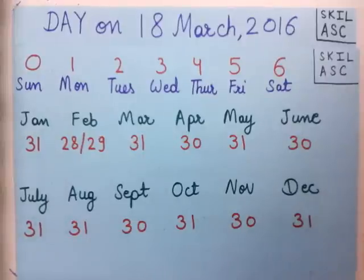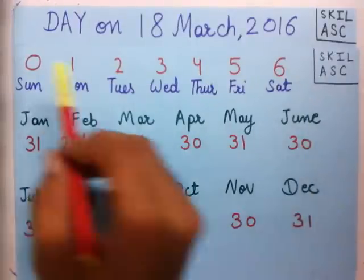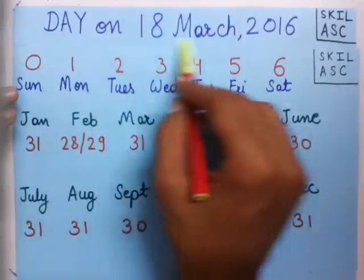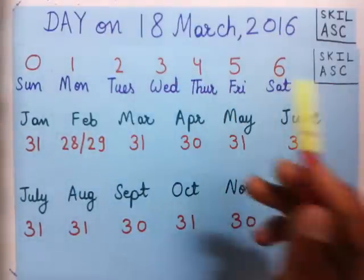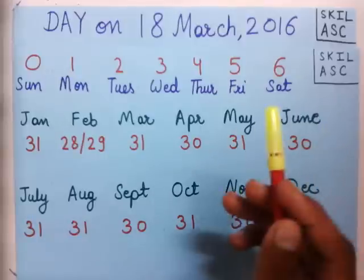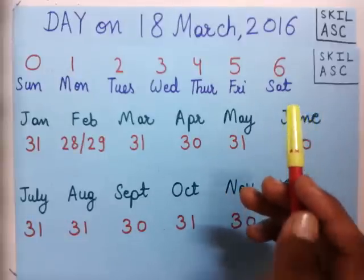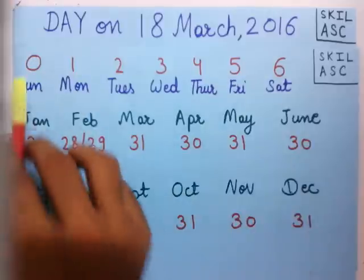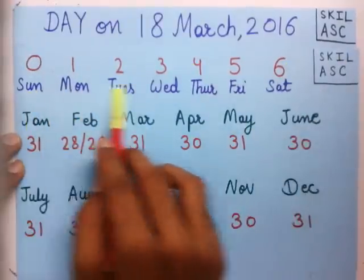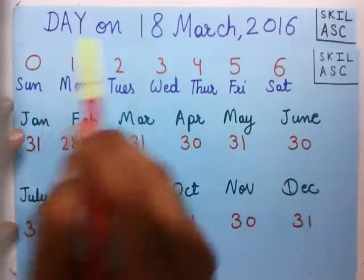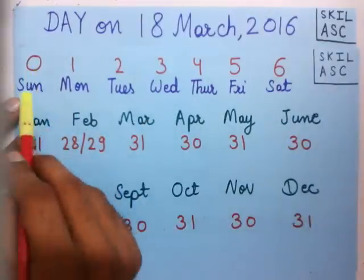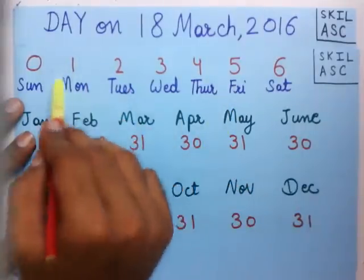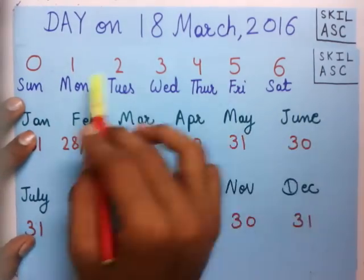Welcome to learning about calendars. We are going to learn how to find the day on any given date. To find the day on any given date, our aim should be to find the number of odd days. Once we know the number of odd days, we can easily find out the day of the week from this table — if the number of odd days is zero the day is Sunday, if one then Monday, and similarly for the other days.